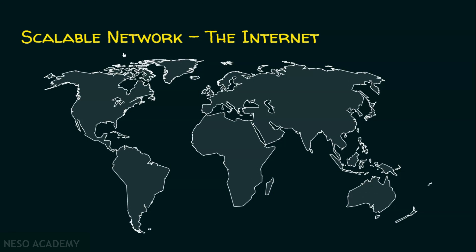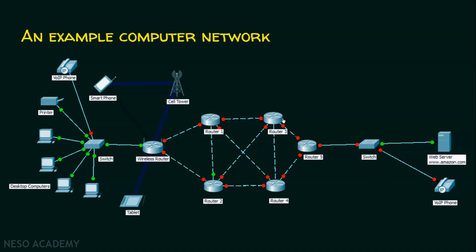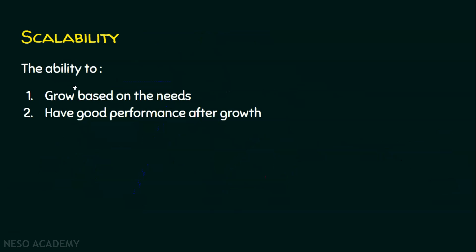The best example of a scalable network is the internet. Even at this moment, many new devices are connecting to the internet and communicating with each other. The internet handles this very perfectly and always gives scope for newcomers. In this example, assume 100 computers are connected to router 3, and we expect the network to work the same even after adding those 100 devices. This is scalability — the ability to grow based on needs and maintain good performance even after growth.